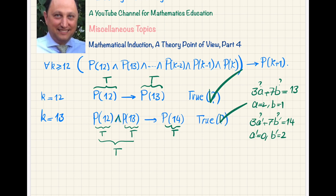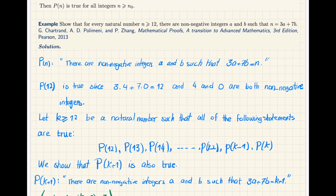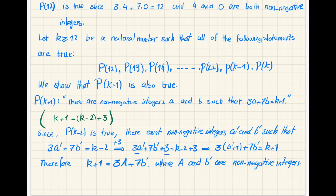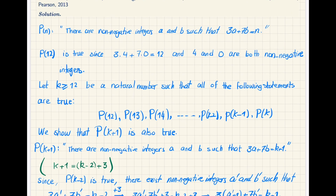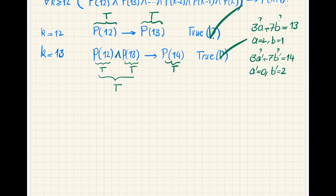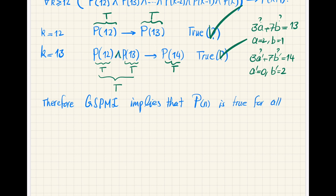This problem, while not involving heavy calculations, is logically very important. If you only write the main argument and ignore K = 12 and K = 13, the proof is incomplete. You must prove the statement for all natural numbers greater than or equal to 12. Therefore, by GSPMI, P(N) is true for all natural numbers N ≥ 12.